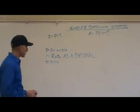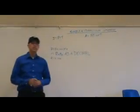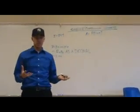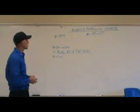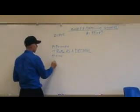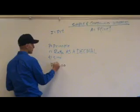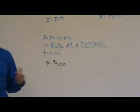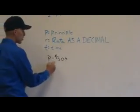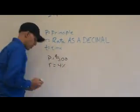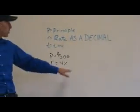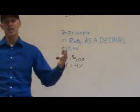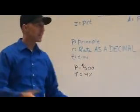Let's do an example. Let's say that you are going to invest simple interest, $500 in a bank. So P equals $500. And they are going to pay you a 4% rate. So your rate is 4%. But remember, we don't want to use the percent. We want to use it as a decimal.